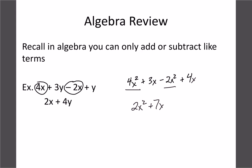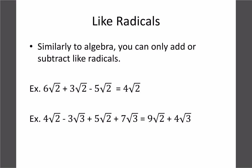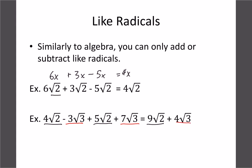When we did like terms, they have to be the same letter and the same exponent. With radicals it works the same — we have to have the same radical number. So instead of 6x + 3x - 5x in algebra giving us 4x, here our radical is the like term. So 6√2 + 3√2 - 5√2 gives us 4√2. For the next example: 4√2 + 5√2 = 9√2, and -3√3 + 7√3 = 4√3. They have to be the same radical.